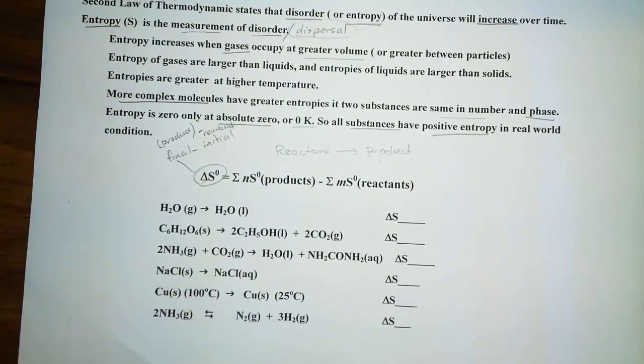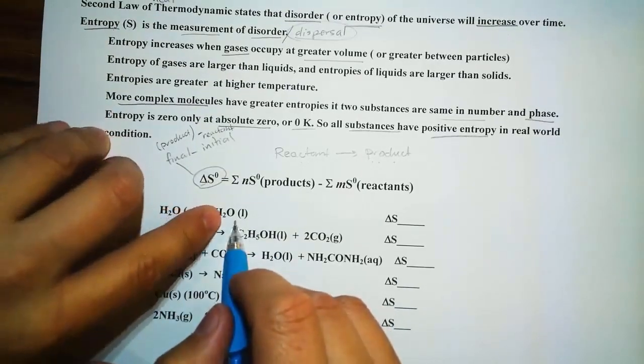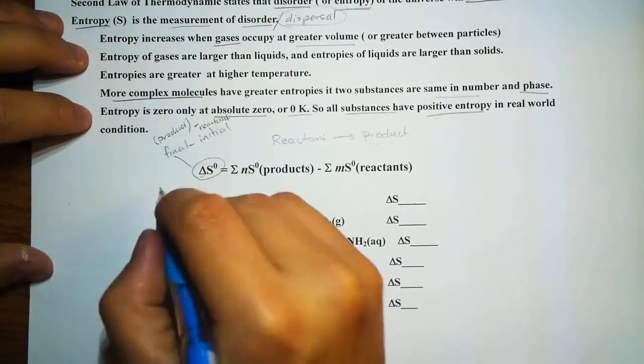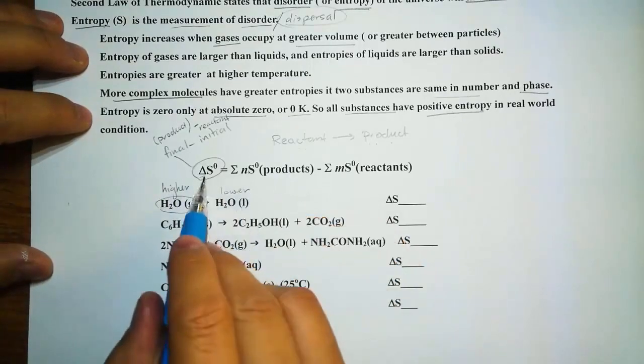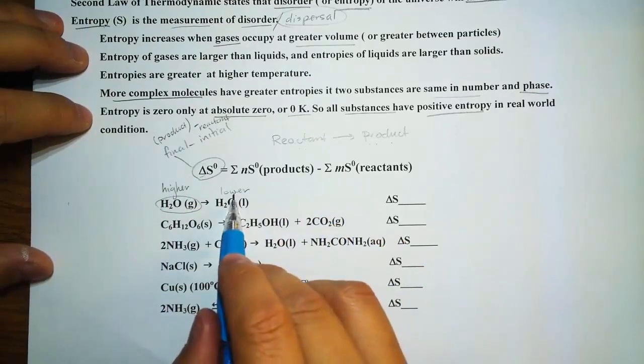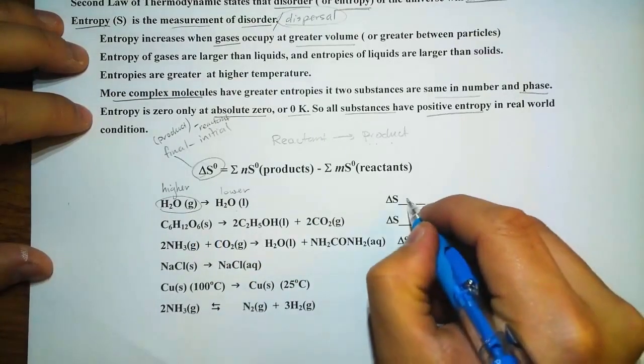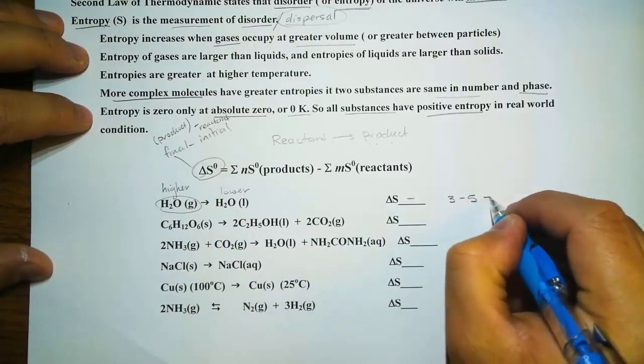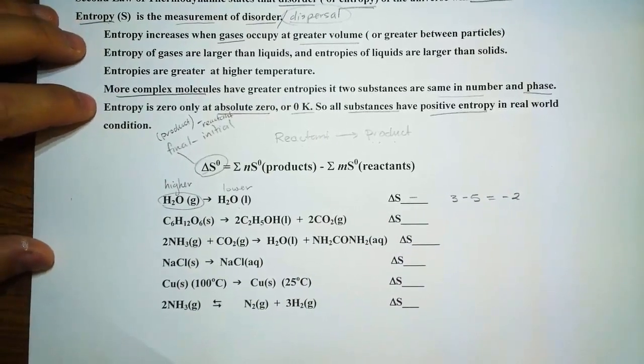Now let's try this problem together. Here, I have water in a gaseous phase versus in the product water at the liquid phase. Of course, this would be at the higher entropy. This would be lower. But if we use this equation, product minus reactant, we have a smaller number minus a higher number. What would we get? Of course, it's going to be a negative number. Just if I take 3 minus 5, what do I get? I have a negative 2.